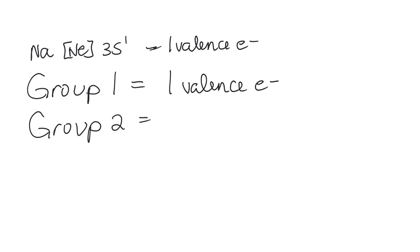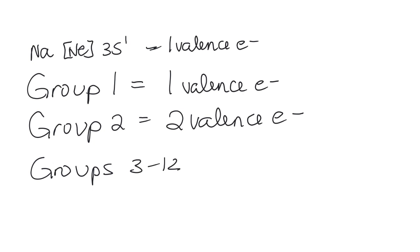Group 2 elements all end in S2, which means they all have two valence electrons. Groups 3 through 12 are the transition elements — they're all the D block, so their last electrons are in the energy level before. Technically they all have two valence electrons because the outermost energy level is S. For example, scandium is argon with 4S2 and 3D1, so all electrons in the outermost fourth energy level are S2. So groups 3 through 12 have two valence electrons.